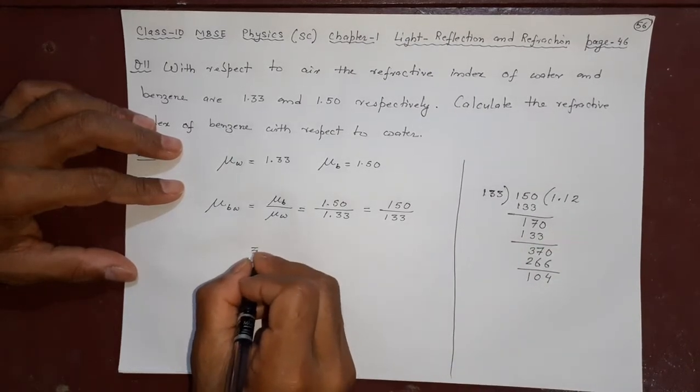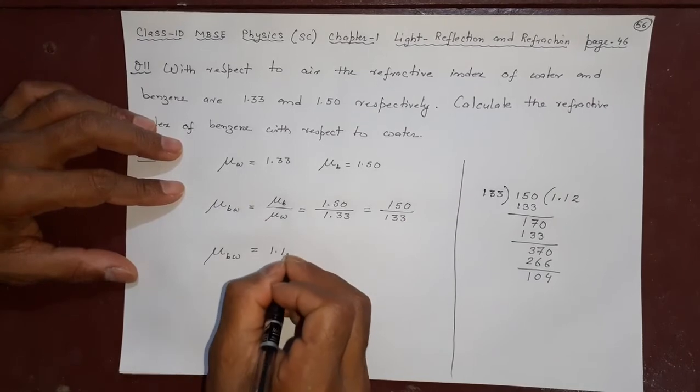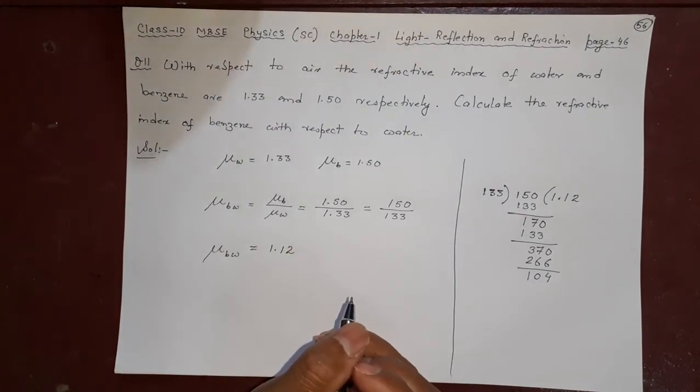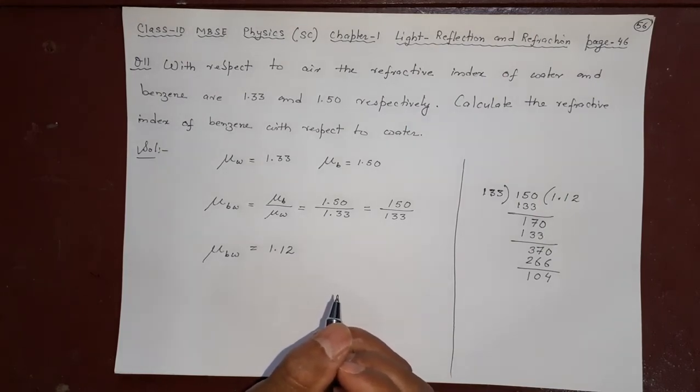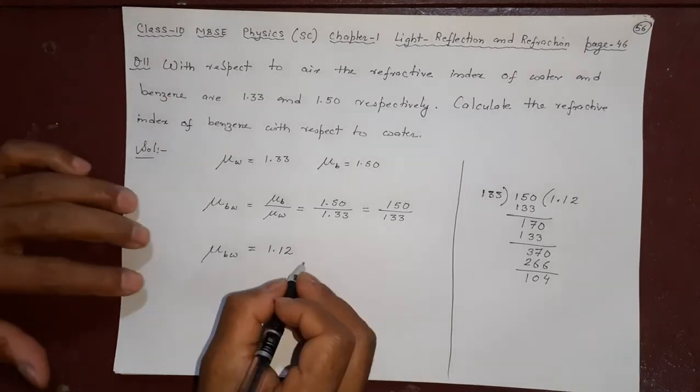1.12 is your answer. μbw equals 1.12. This is the refractive index of benzene with respect to water. This is what we needed to find. Thank you.